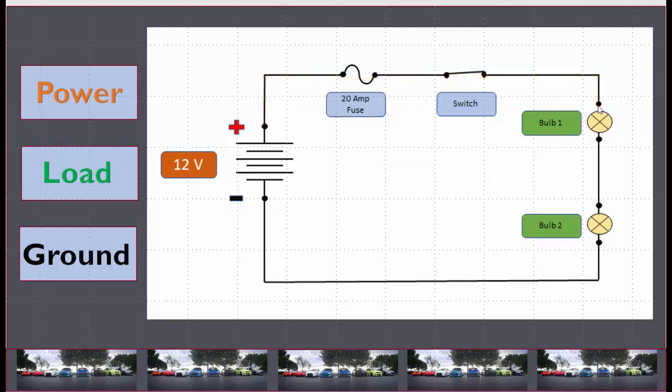And the load is everything from where the first load starts to where the last load ends. So if there's more than one load in the circuit, the load part of the circuit is where the voltage is going to get used up. If there was only one load in the circuit or one bulb, the load part of the circuit would just be from here to here. But in this case, the load is from here to here because the two loads are in series, and that's where the voltage gets used up.